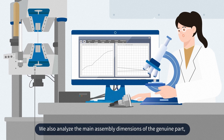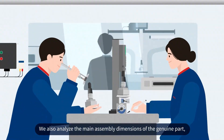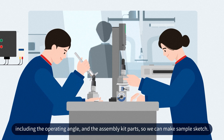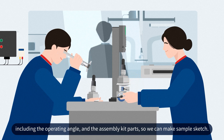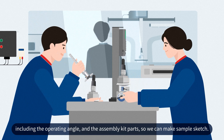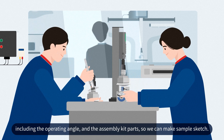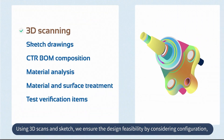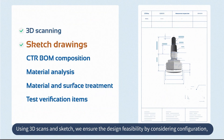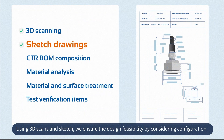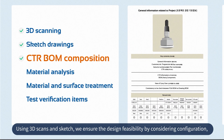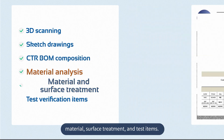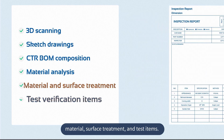We also analyze the main assembly dimensions of the genuine part, including the operating angle and the assembly kit parts, so we can make a sample sketch using 3D scans. We ensure the design feasibility by considering configuration, material, surface treatment, and test items.